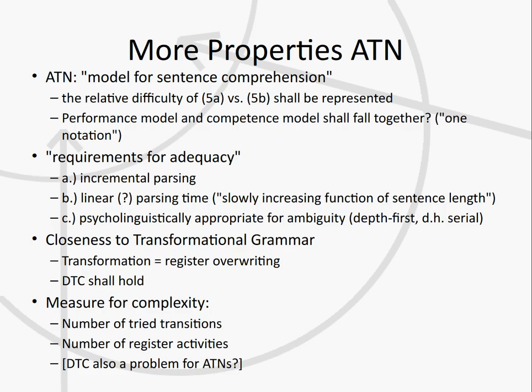Augmented transition networks were designed as a model for sentence comprehension, meaning they should work similarly to the brain. So if a sentence is very difficult because it is very deeply nested, then the processing of that sentence should also be more complex.